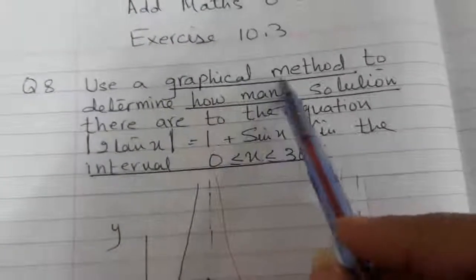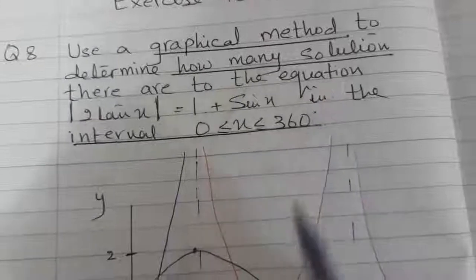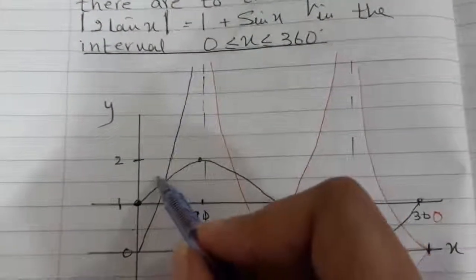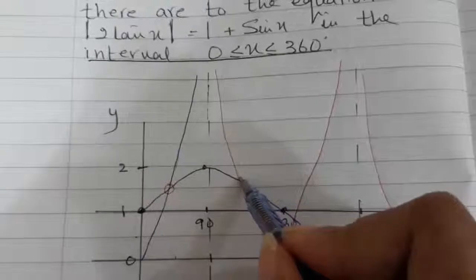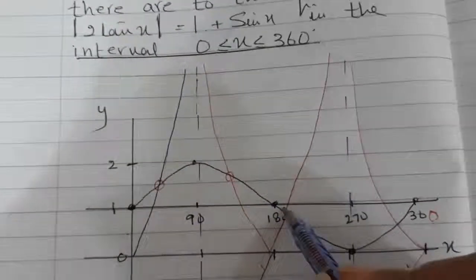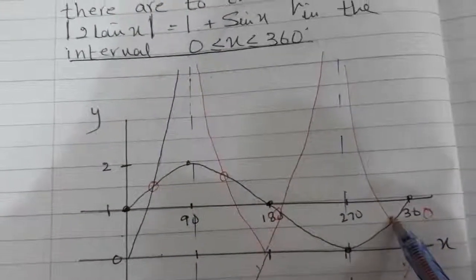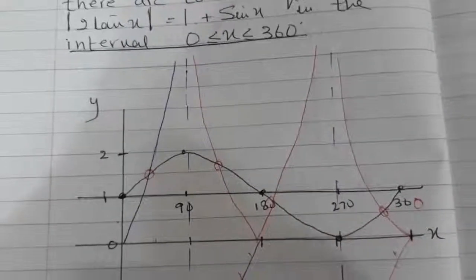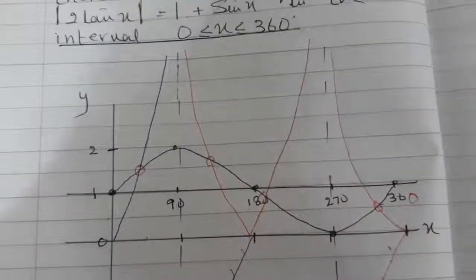Now the part of the question saying 'use a graphical method to determine how many solutions' — we have a sketch and we see at how many points the curves are intersecting. This is the first point, this is the second point, this is the third point, and this is the fourth point. So it has 4 solutions.